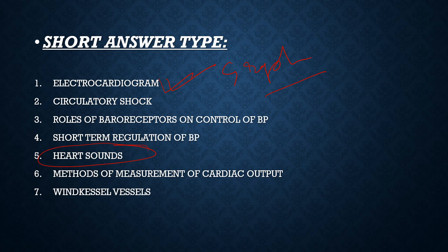Next, the heart sounds. Different types of heart sounds. Basically, the question asked in this topic is the difference between different types of heart sounds. In different types of heart sounds, the first and second heart sound is mostly asked. The difference between first and second heart sound, which I have already discussed in my videos. Next, we have the methods of measurement of cardiac output. The Fick principle is the most important method which you must mention in your answers, and other methods too you should mention.